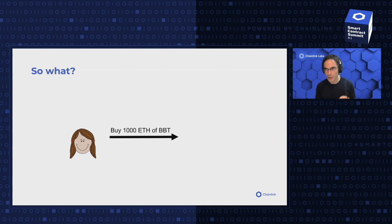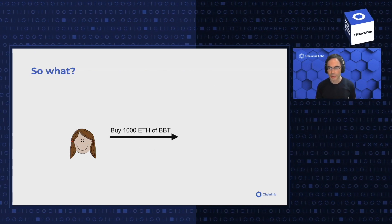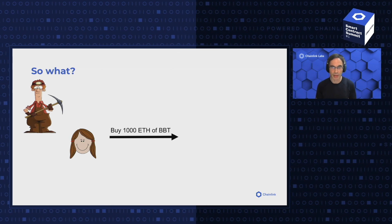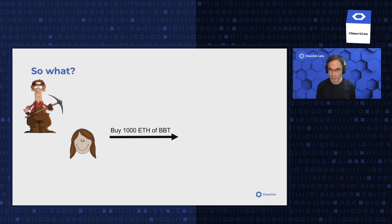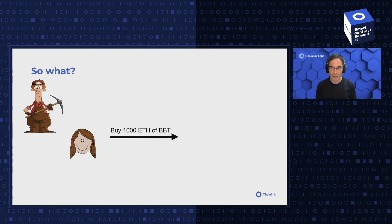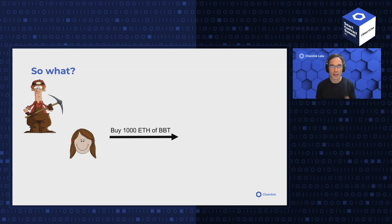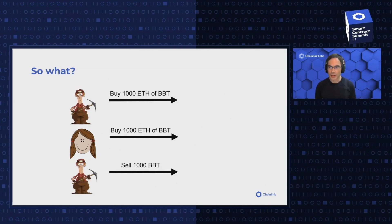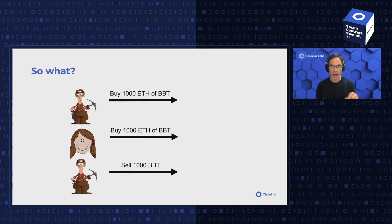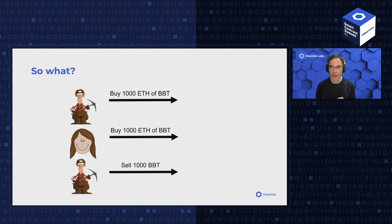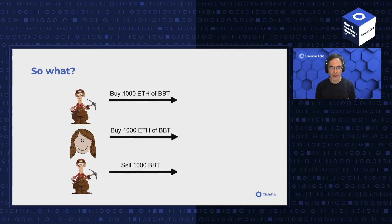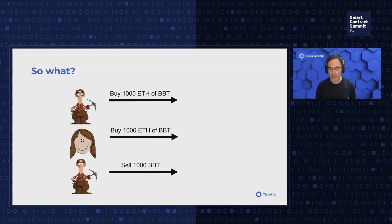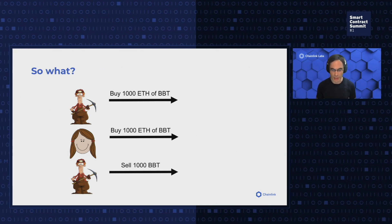When Alice submits her transaction to the mempool, it's observed by all miners and known to the miner that mines her transaction. This miner can take advantage of this knowledge and its ability to order transactions by creating two transactions — a buy transaction and a sell transaction — and ordering its buy transaction before Alice's and its sell transaction afterwards. This is what's known as a sandwiching attack.